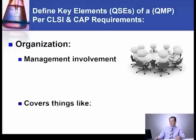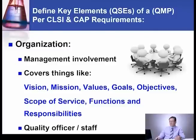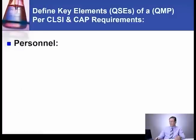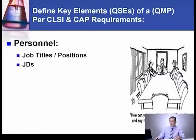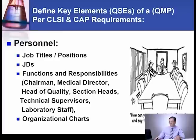Under Organization, you need to cover management involvement including the vision, mission, values, objectives, goals, scope of service, functions, and responsibilities — and also the quality officer or staff. Under Personnel, you need to cover job titles, positions, job descriptions, functions, and responsibilities of different staff such as the chairman, medical director, head of quality, section head, technical supervisors, and laboratory staff — along with an organizational chart.